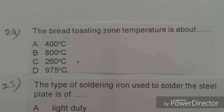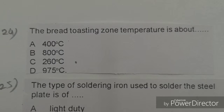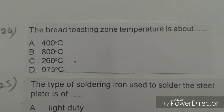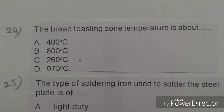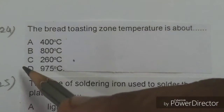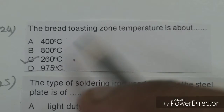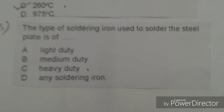Next objective: A brazing zone temperature is about. Options given: 400 degrees centigrade, 800 degrees centigrade, 260 degrees centigrade, 975 degrees centigrade. The right answer is C, 260 degrees centigrade.